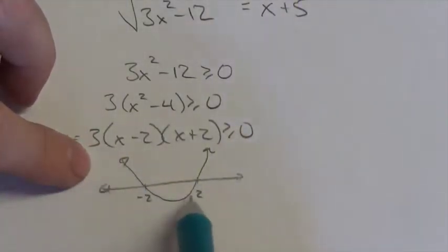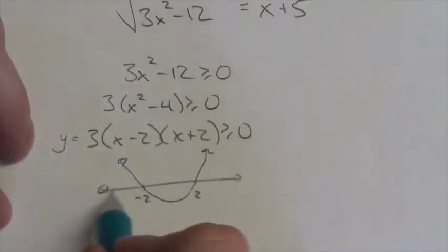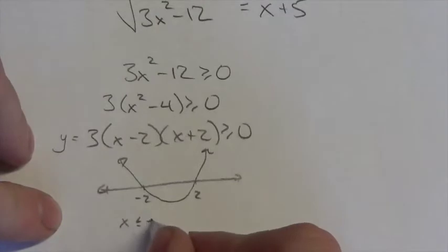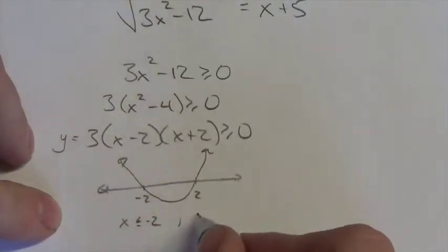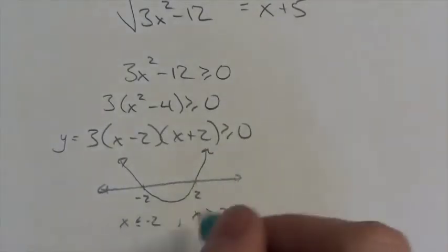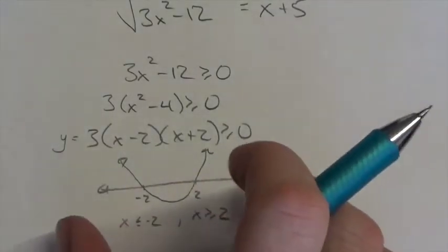So I'm asking where is y greater than or equal to zero? And that occurs when the parabola is above this line, the x-axis. And that's true if x is less than or equal to negative two or if x is greater than or equal to positive two. Okay, now I'm going to come back to this in just a minute here. So that's the interval that we're looking at here.